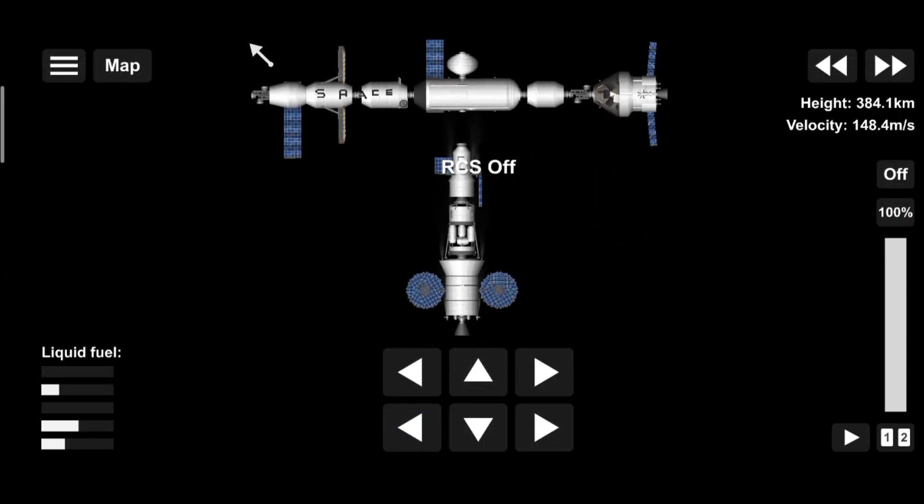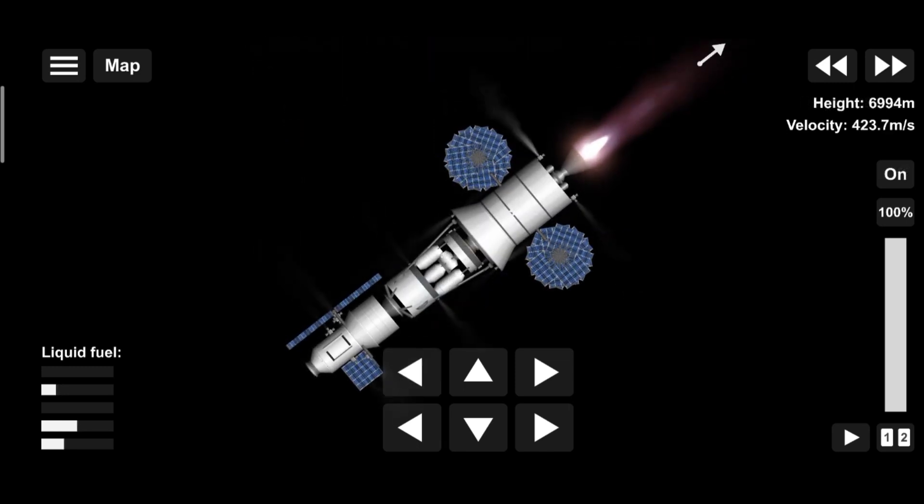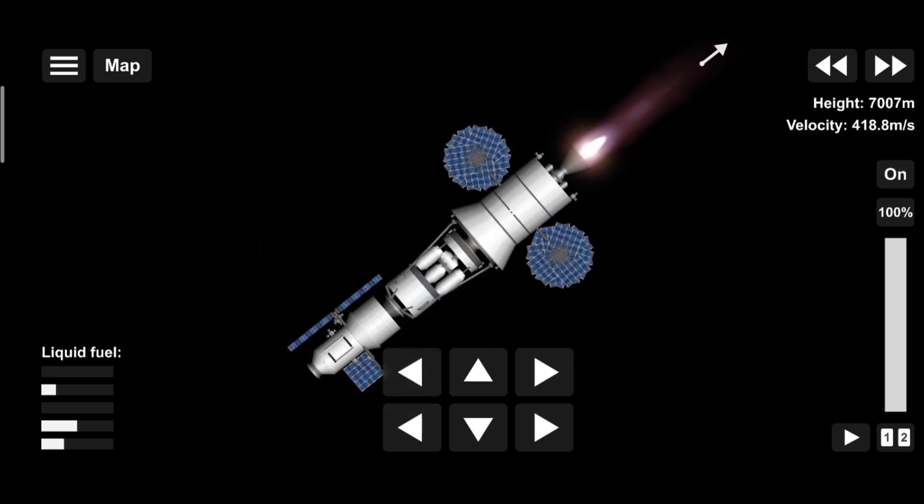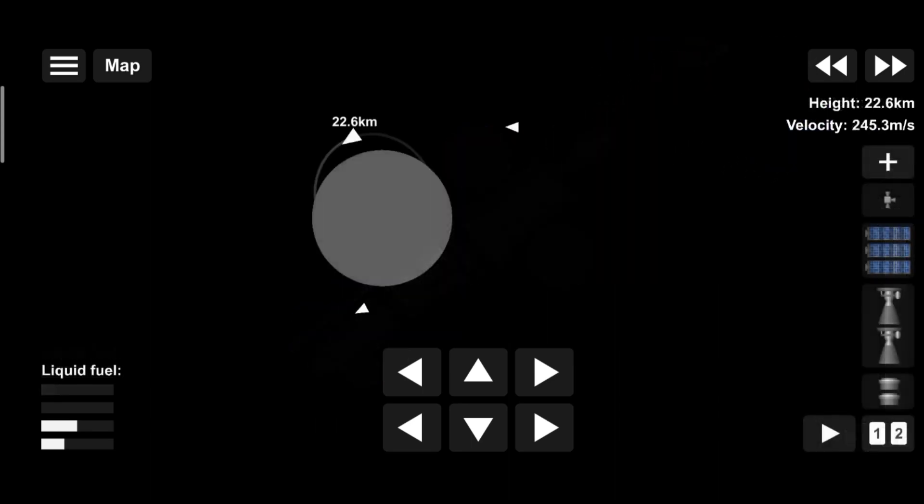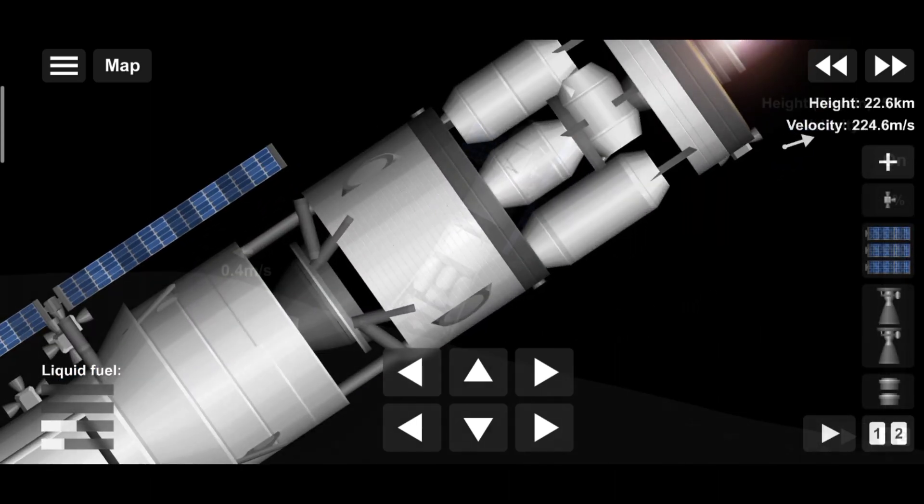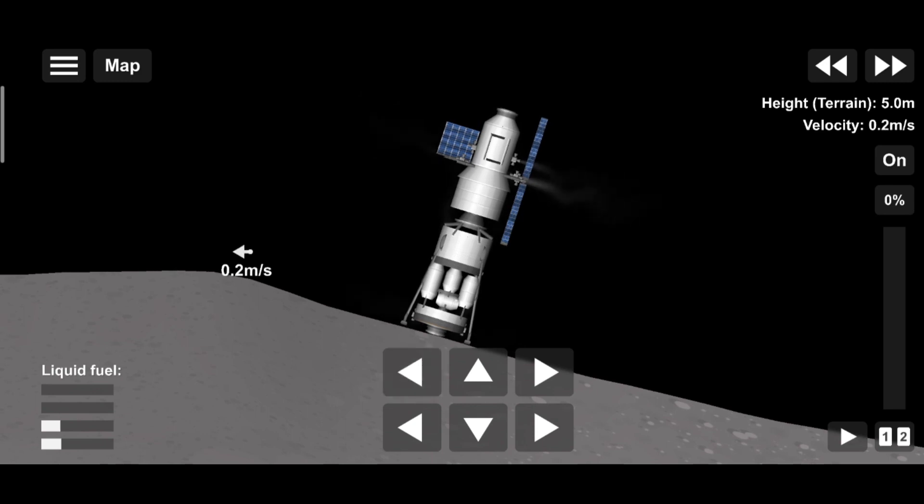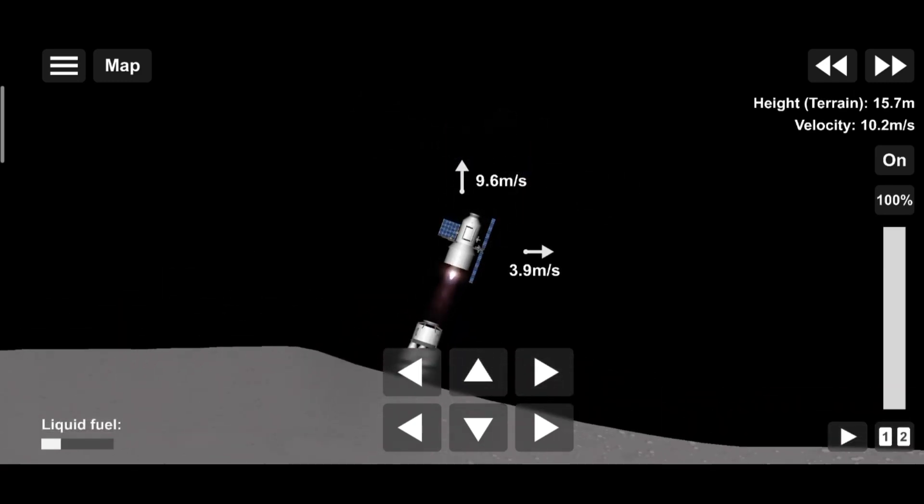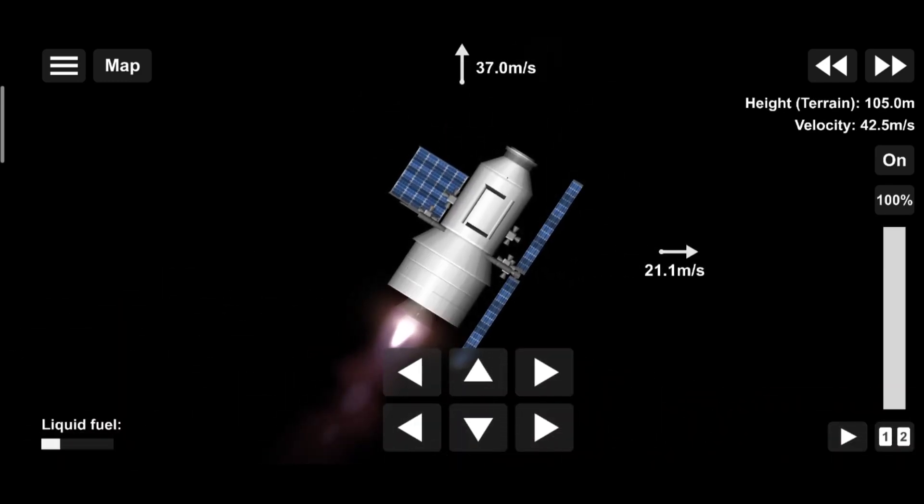The lunar lander system itself is built for three unique steps: descending from the halo orbit of Gateway down to a low lunar orbit, descending from low lunar orbit to the surface, and once the lunar mission is complete, launching from the surface of the Moon and ascending all the way back to the orbiting Gateway.